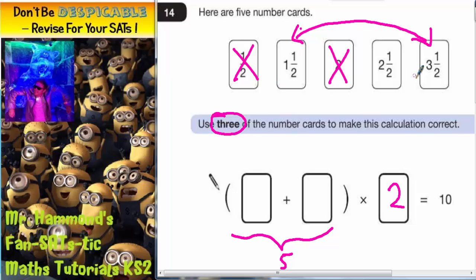Well the one plus the three makes four and the half plus the half makes an extra whole one. Four plus an extra whole one makes five. So it's got to be these two.